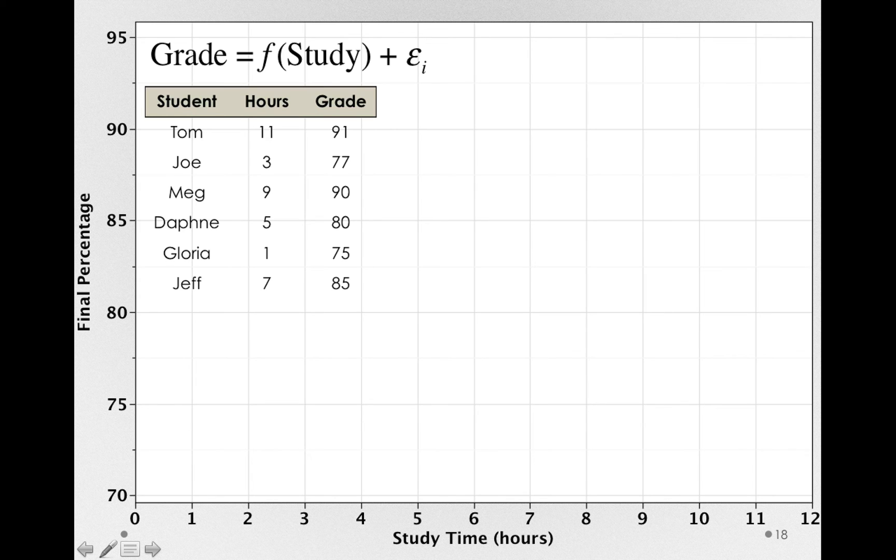Now looking at these scores in the table doesn't really illuminate the relationship. So let's actually plot these scores in a scatter plot. Remember, a scatter plot is simply showing for each student their study time and their final percentage as a single point. So Tom studied 11 hours and Tom scored a 91, so Tom occupies a single point in this plot.